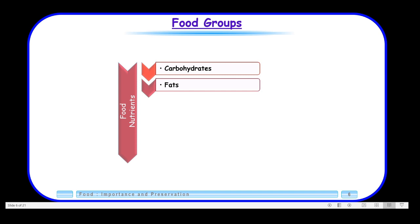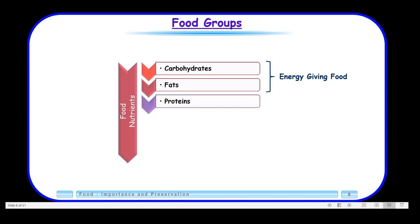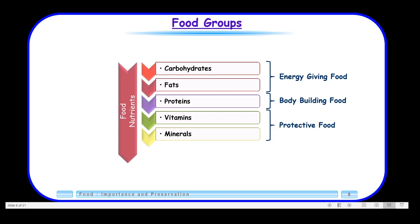So getting back to our first slide: carbohydrates and fats are in the energy-giving category, proteins are in the body-building food category, and vitamins and minerals fall in the category of protective food. Then we have roughage and water. These don't have any food value, but they are still important for digesting all three types of foods. So now one by one, we will take up these nutrients.